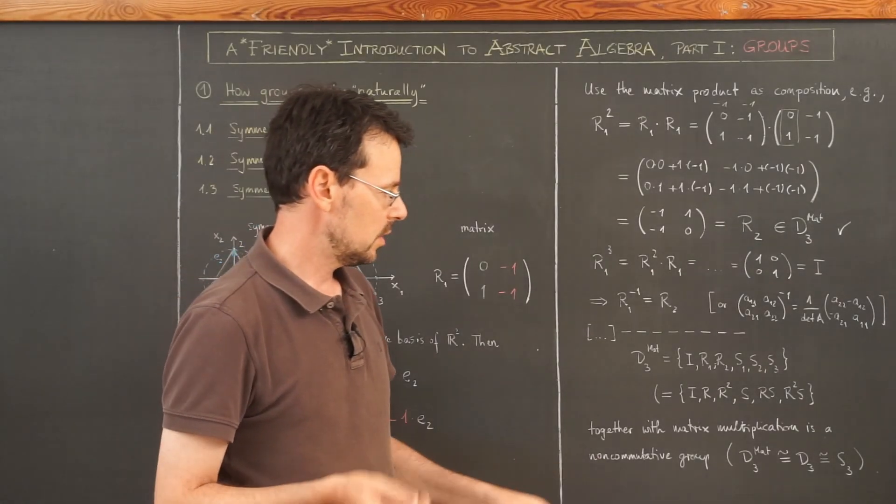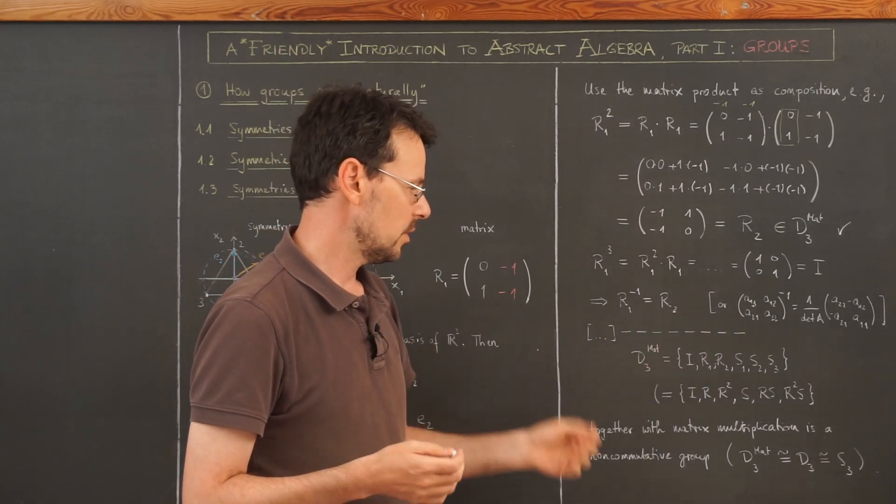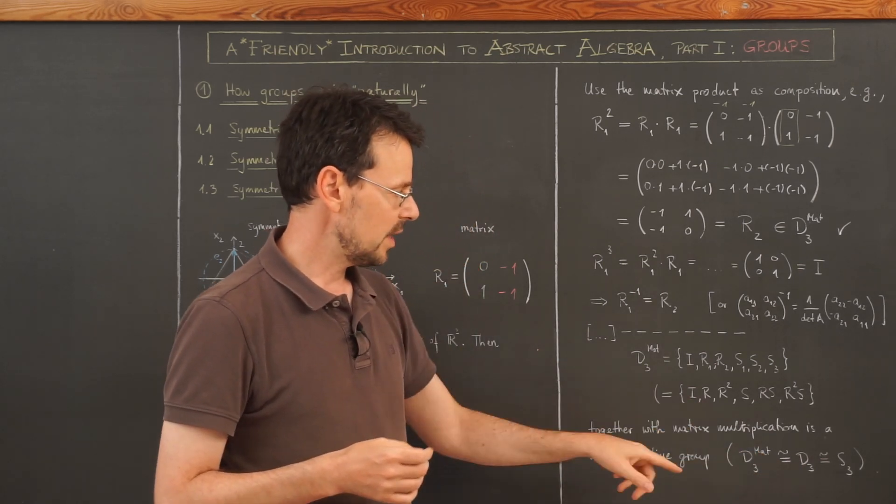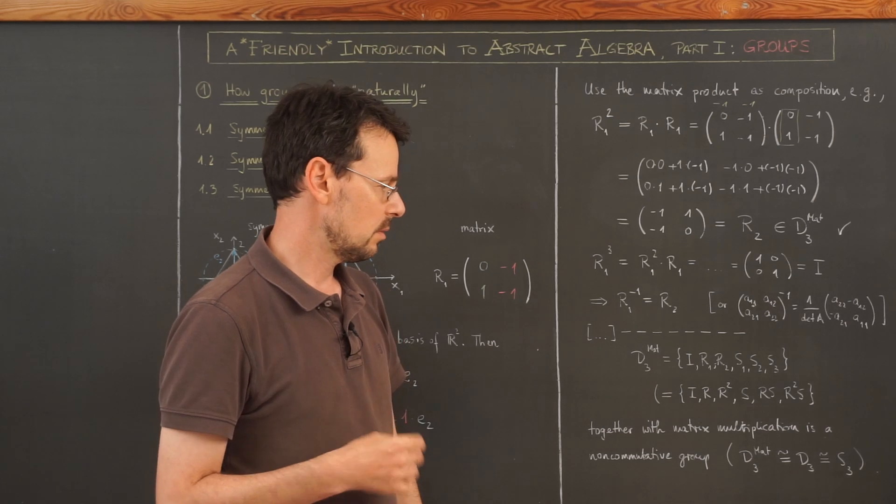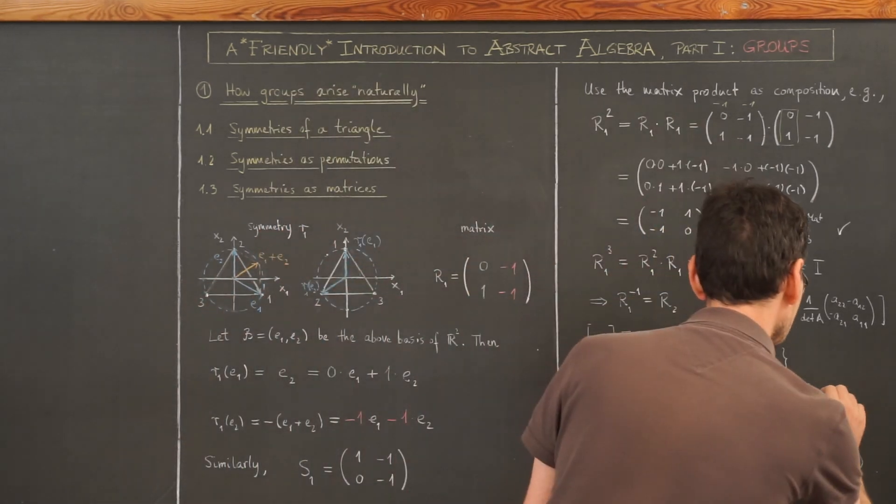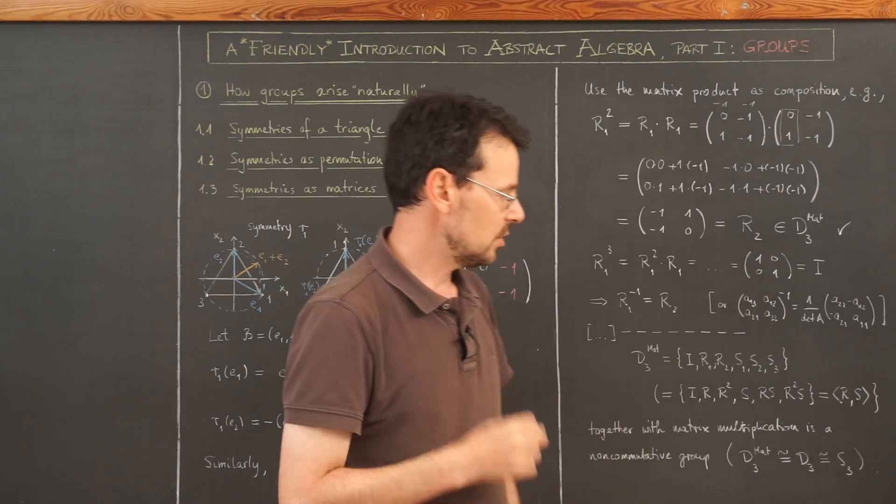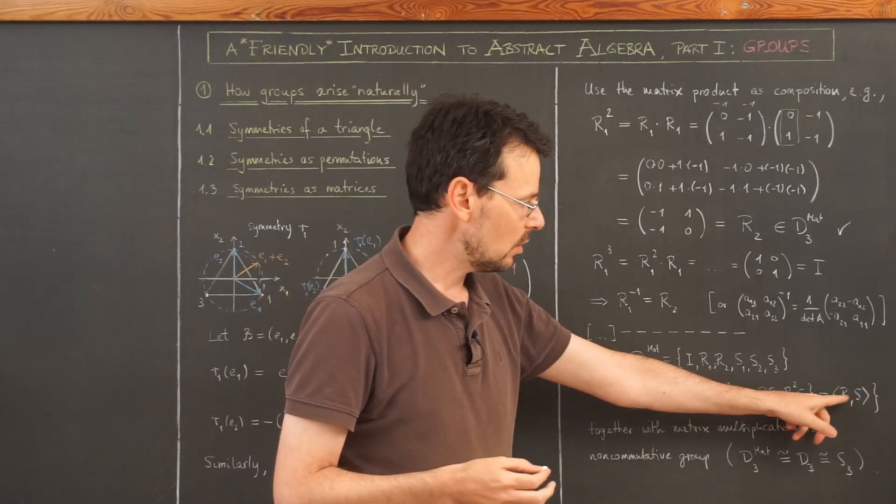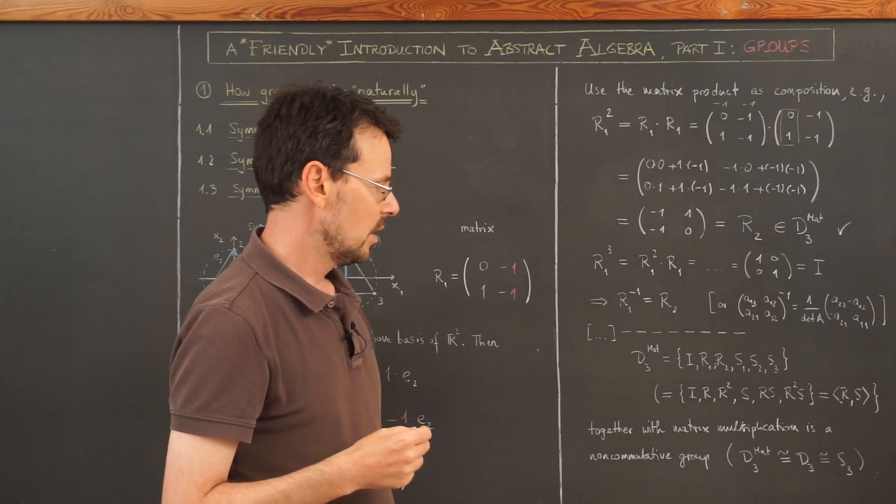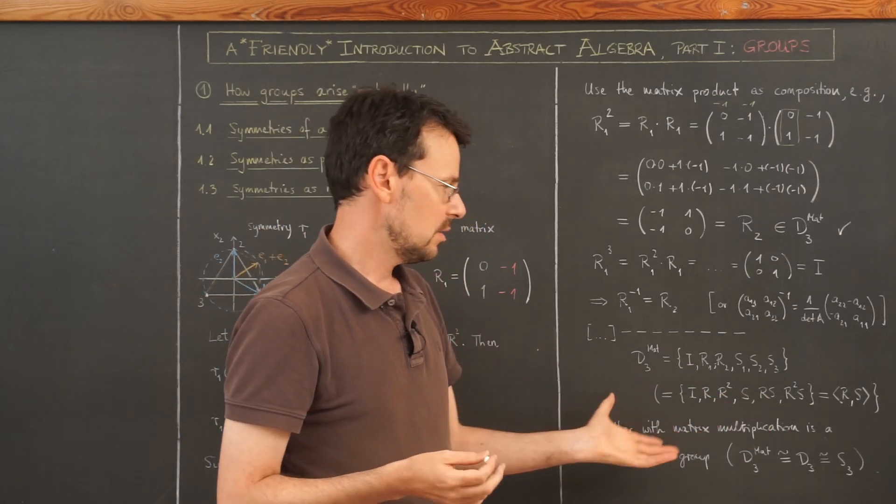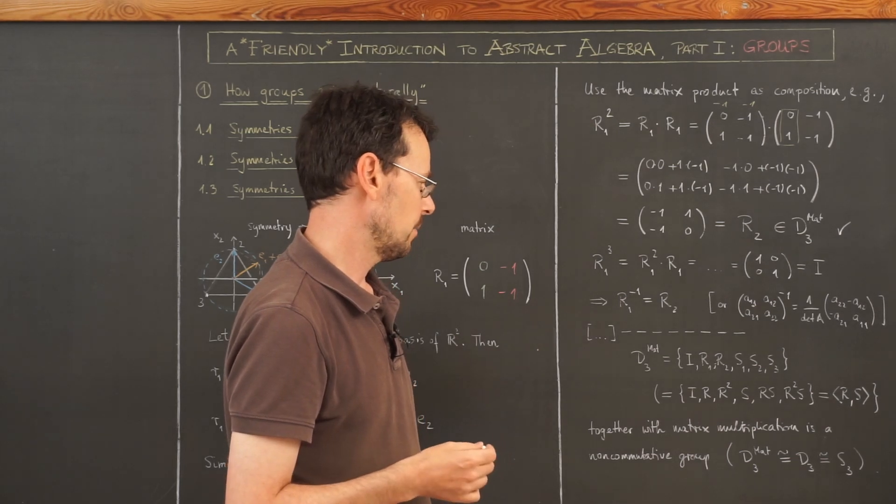One more thing. If you did last week's problem set, you have found out that the permutation version of the dihedral group here is generated by only two elements, namely the rotation by 120 degrees and any of those three reflections. The same is true here. And this is written like that. This means R and S generate this group, meaning you take all the powers of R composed with all the powers of S and then you actually end up with all the elements of this group here. And this is sometimes a bit easier to work with than here those actually six different looking matrices.